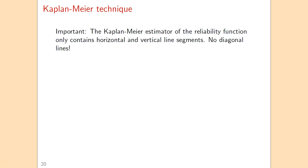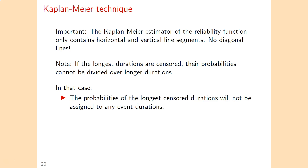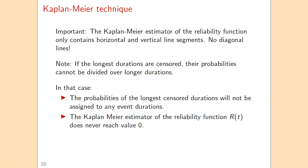An important note when making this graph is that we only have horizontal and vertical line segments — no diagonal lines. Another note: if the longest duration is censored, we cannot spread that corresponding probability over longer durations. In that case, those probabilities simply cancel out, the sum of probabilities is no longer 1, and the Kaplan-Meier estimator of the reliability function will never reach 0 — it remains constant at some positive value beyond the last observed event.